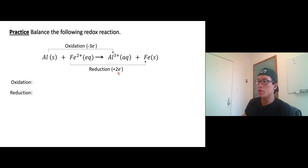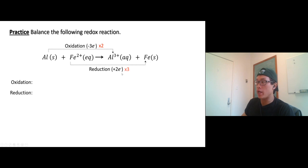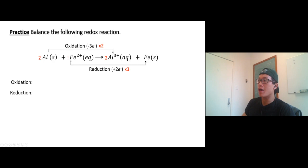What do we do here? Well, that's when common multiples come into play. The common multiple of three and two is six. So I'm going to multiply three by two and two by three, and they're all going to get six. Which means I'm going to need two aluminum, two Al³⁺, and three Fe²⁺, and then three iron metal.